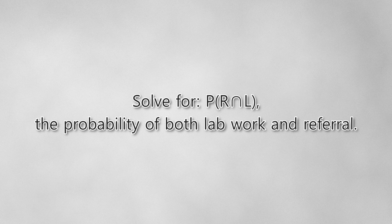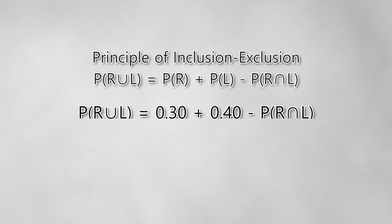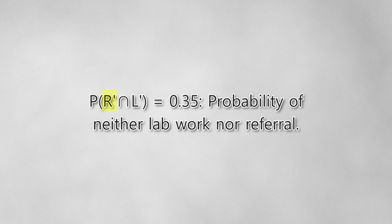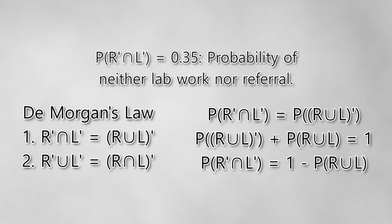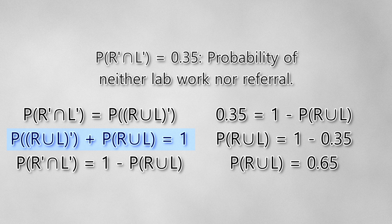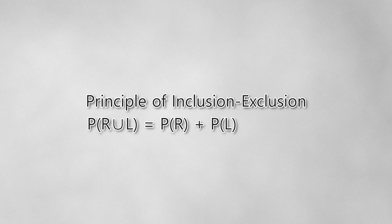Let's turn these words into variables. We're given three probabilities: the probability of referral to a specialist R is 30%, the probability of requiring lab work L is 40%, and the probability of neither lab work nor referral to a specialist is 35%. We're asked to find the probability of R intersection L. We aren't given R union L directly, but the complement of R intersection complement of L — a visit resulting in neither lab work nor referral — gives us R union L via De Morgan's Law. De Morgan's Law provides a relationship between the union and intersection of sets, especially when complements are involved. Recognizing that the sum of an event's probability and its complement equals 1, we apply simple algebra to get that the probability of R union L is 65%, then plug this into the inclusion-exclusion formula.